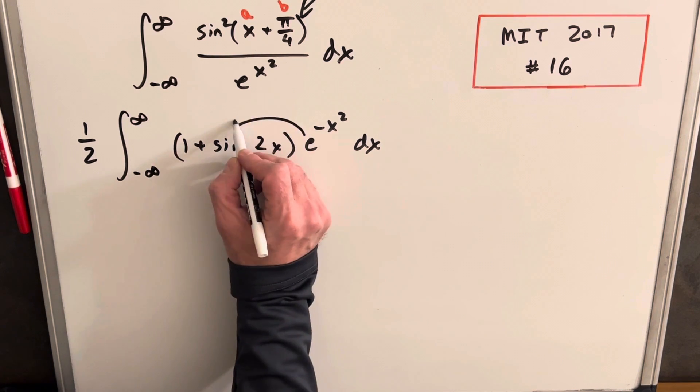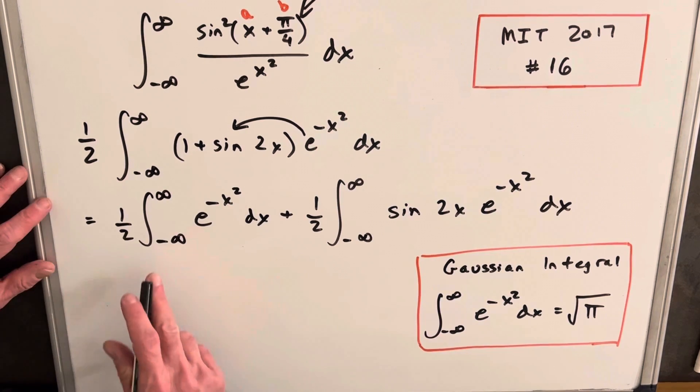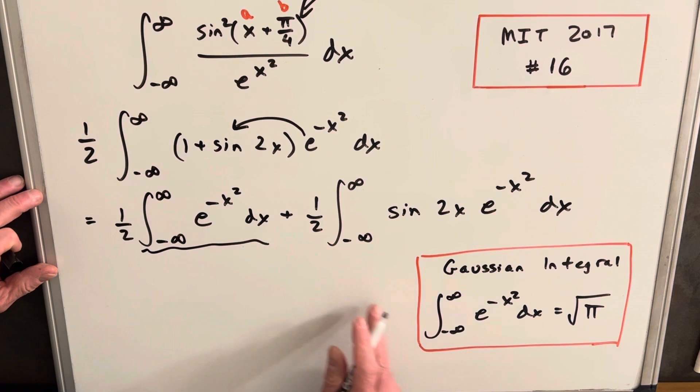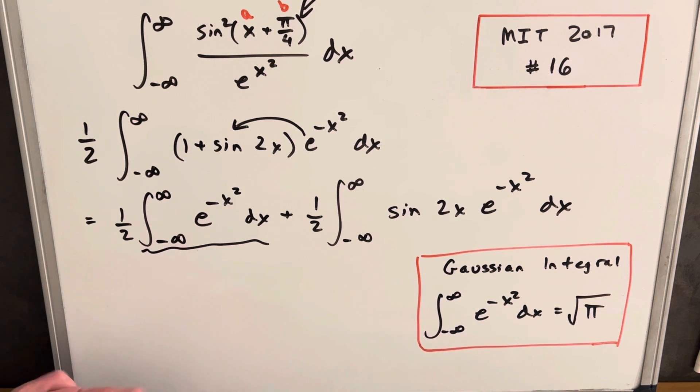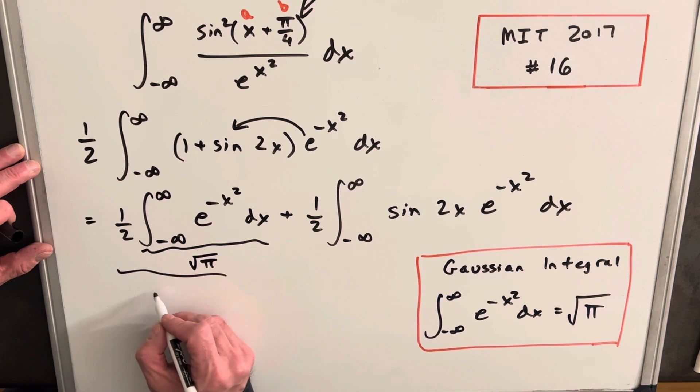But before I do that, let's distribute this and break this into two integrals. So for the first integral, we just notice that this piece here is in exactly the same form, it's identical to our Gaussian integral. So from this formula we know what this is: this piece is going to be square root of pi. So just let's not forget our half, so it's going to be square root of pi over 2.